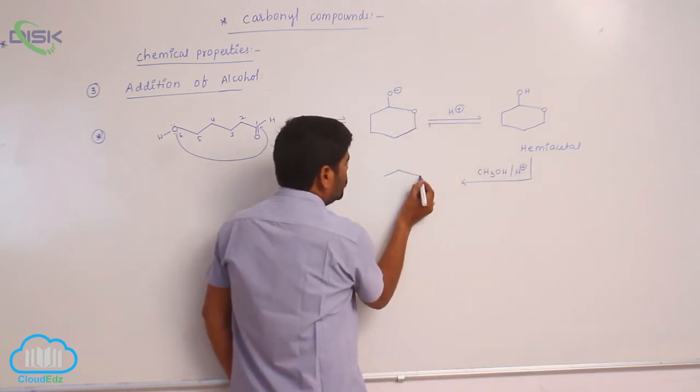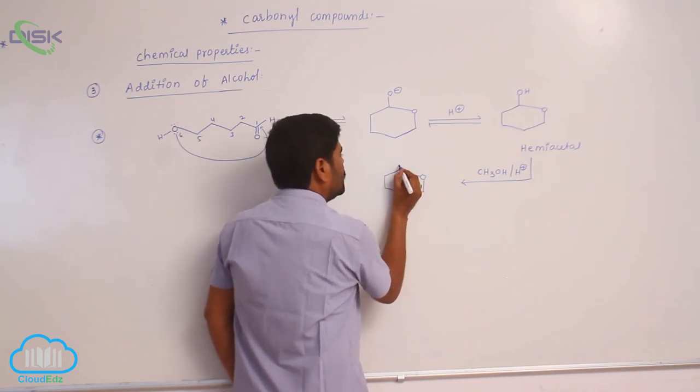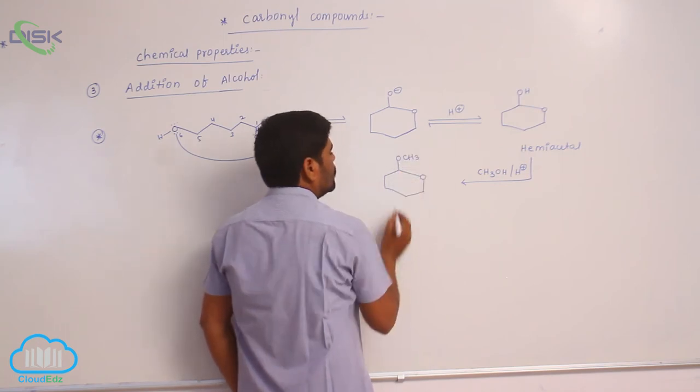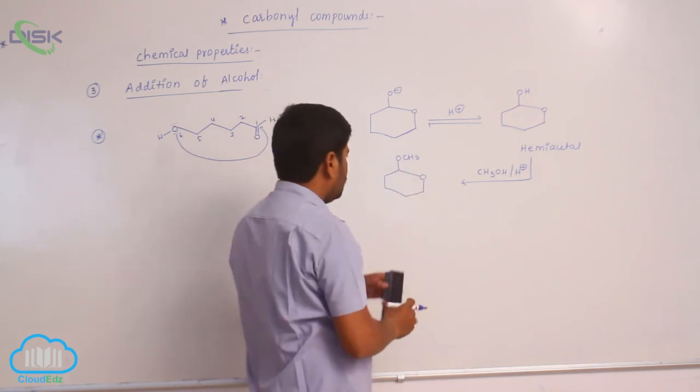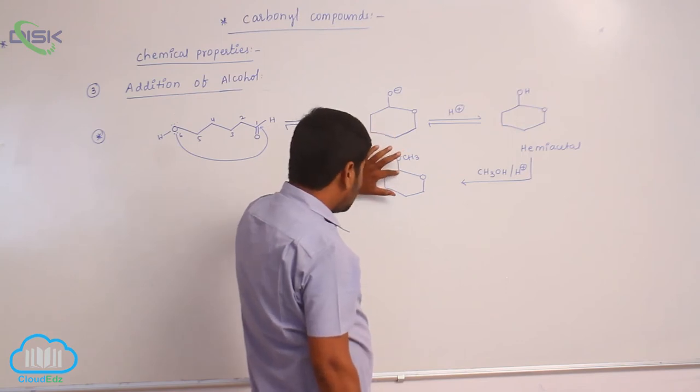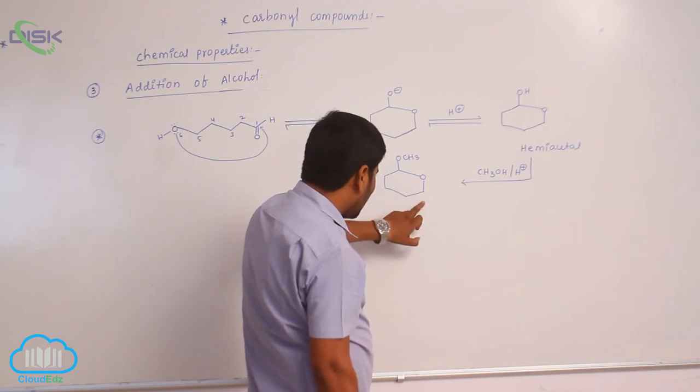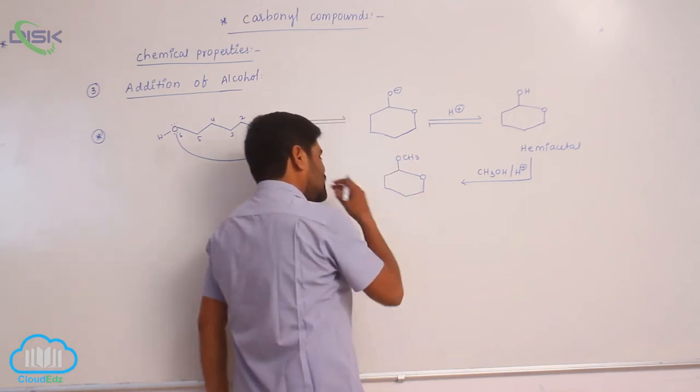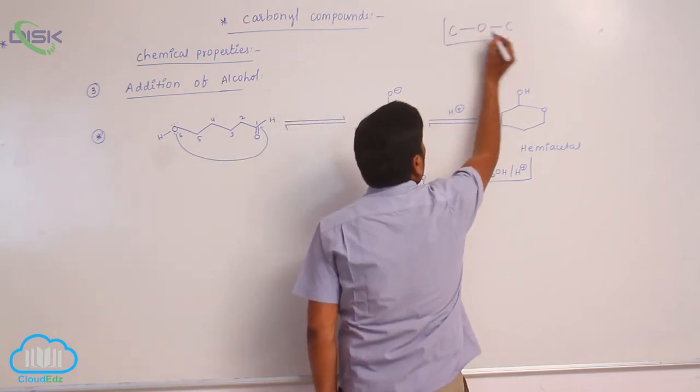Here is OCH3 because COC, then COC. Please see this side, COC, then COC, it is which linkage, ether linkage. It is also which linkage, ether linkage. So, that is the reason why, COC is which linkage, COC, this is what, ether linkage.